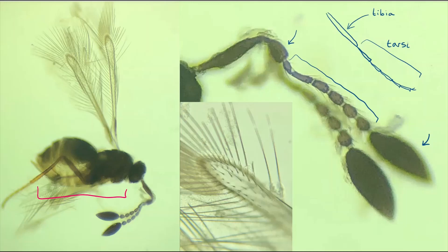Using Medvedev, the first character you need to check is how the abdomen is attached to the thorax — either broadly sessile or attached by a narrow petiole. As you can see here, the abdomen is attached fairly broadly rather than by a petiole.